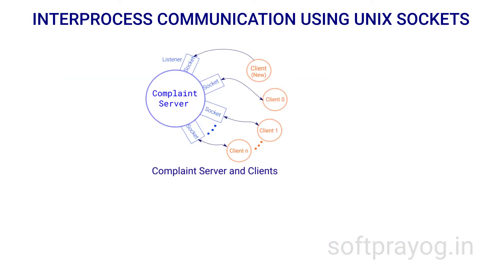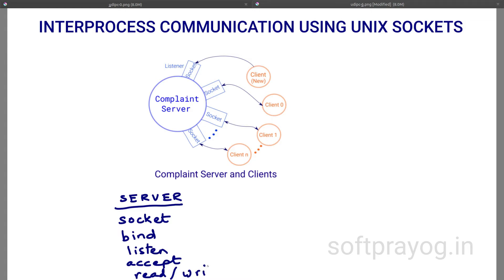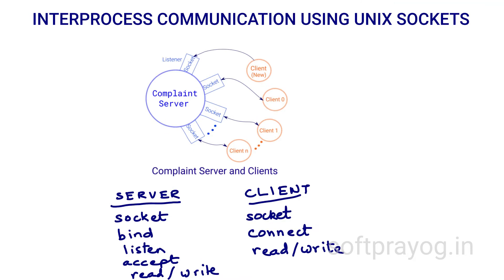Interestingly, socket communication is asymmetrical. If you use some other inter-process communication mechanism, say FIFO, the server and client make nearly the same calls. But for sockets, client and server calls are quite different. The server makes these calls: socket, bind, listen, accept, and then read and write. The client makes the calls: socket, connect, and then read and write. The server has a listening socket on which it listens for new connect requests. Once it accepts a connect request, a new socket is opened for data communication and the server and client communicate on that socket.